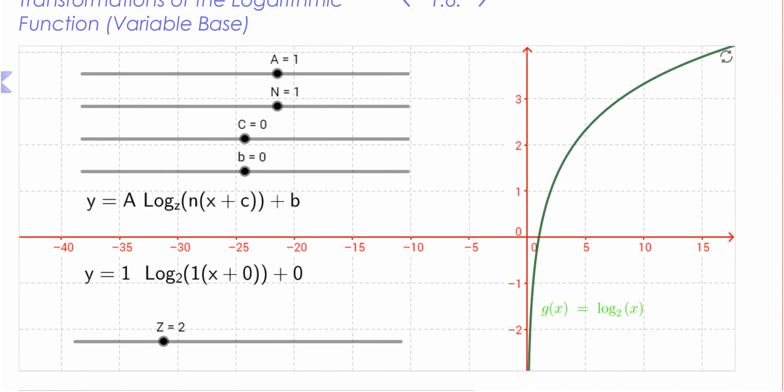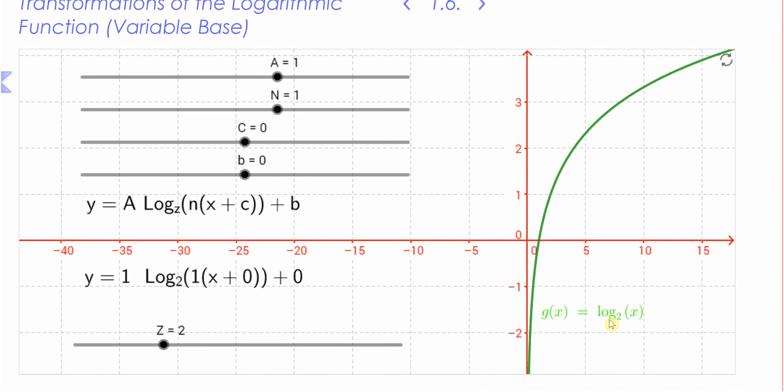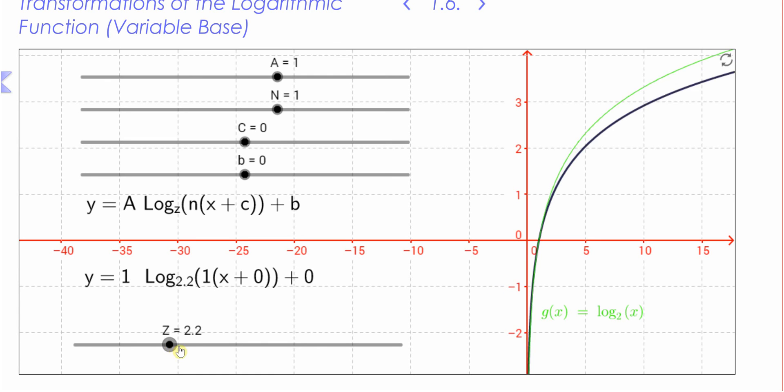Here's a good one. Here's a logarithmic function. So the green one is log to the base 2 of x. The interesting thing about this one is that we can actually change the value of the base of the logarithm. The value of the base of the logarithm is neither a, n, c, or b. It's something different. But you can see what it does with this app I've created.